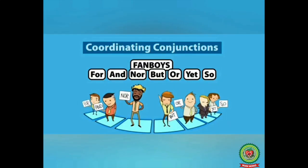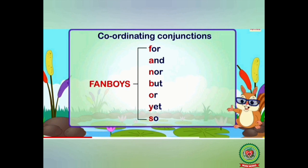Now we'll discuss the different coordinating conjunctions. There are seven coordinating conjunctions, and a very easy trick to memorize them is to learn the word FANBOYS. F stands for 'for,' A stands for 'and,' N stands for 'nor,' B stands for 'but,' O stands for 'or,' Y stands for 'yet,' and S stands for 'so.' These are all the coordinating conjunctions: for, and, nor, but, or, yet, so.